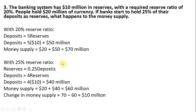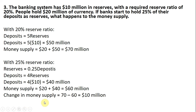With a 25% reserve ratio, reserves equal 0.25 times deposits. Solving for deposits by dividing by 0.25, deposits will now equal 4 times reserves. With reserves of $10 million, deposits will equal 4 times 10, or $40 million. The money supply under this scenario is the $20 million people are holding plus the $40 million in deposits, equals $60 million. So, the money supply fell from $70 to $60 million as a result of the required reserve ratio increasing — a change of $10 million. That's my last problem. I hope you found this helpful.